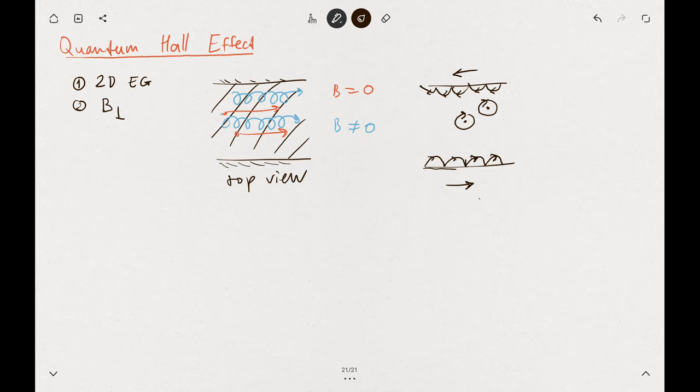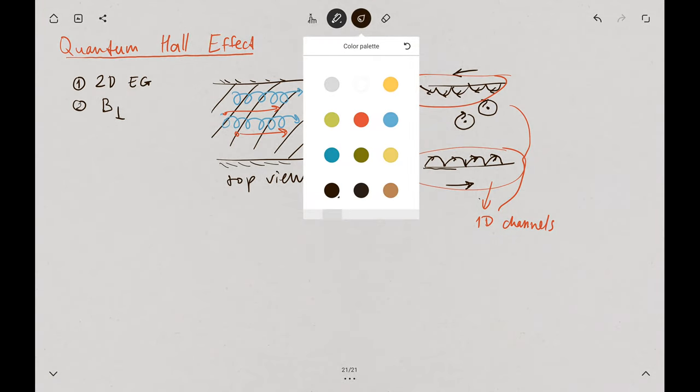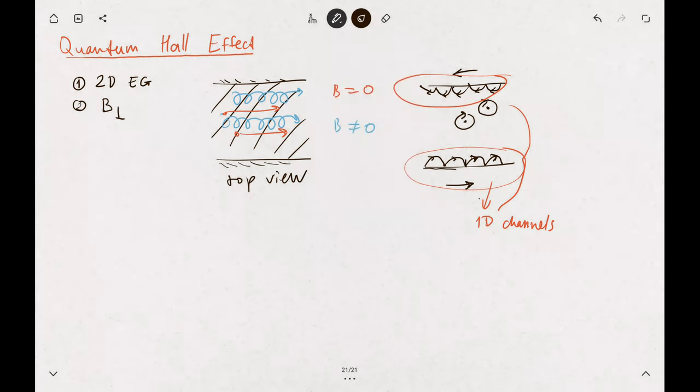So you have now, very naively speaking, one dimensional channels. Those two one dimensional channels. And the behavior along those edges has a chirality, right? So there's right moving and left moving particles.